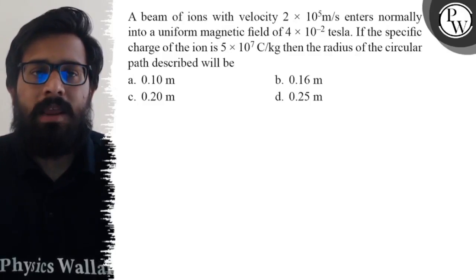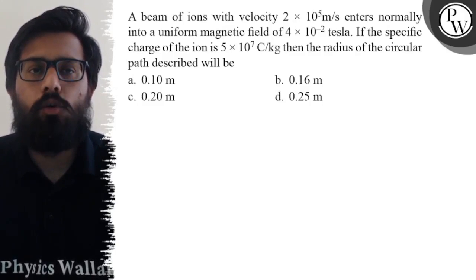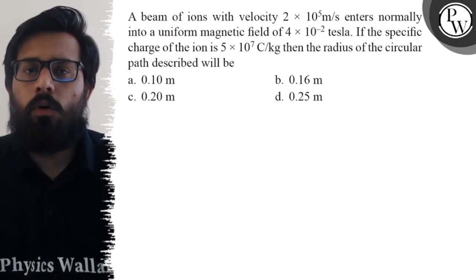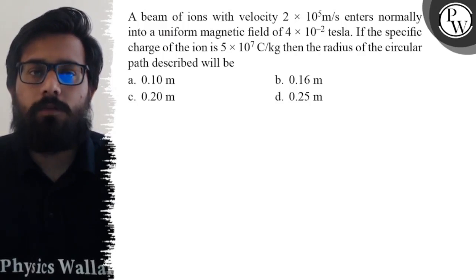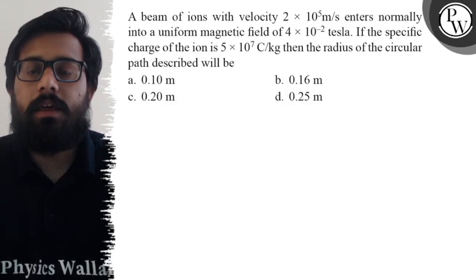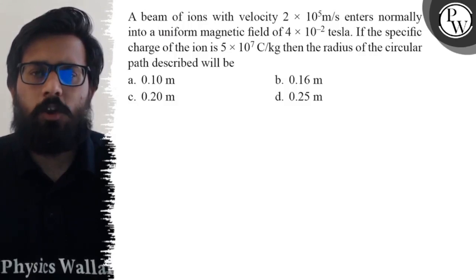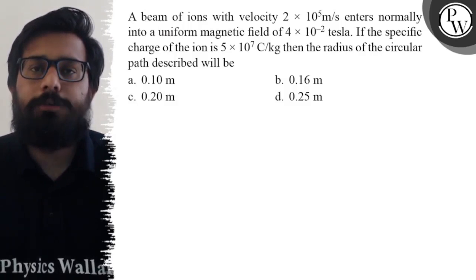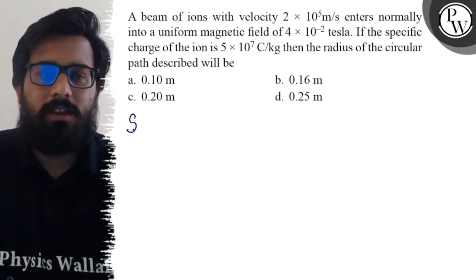Hello, let's see the question. A beam of ions with velocity 2 × 10⁵ m/s enters normally into a uniform magnetic field of 4 × 10⁻² tesla. If the specific charge of the ion is 5 × 10⁷ coulomb per kg, then the radius of the circular path described will be: first option is 0.10 meter, second option is 0.16 meter, third option is 0.20 meter, and fourth option is 0.25 meter.